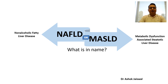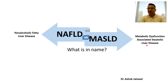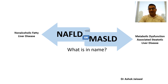Hello everyone. As we all know, very recently the term NAFLD — that is non-alcoholic fatty liver disease — has been renamed as MASLD, that is metabolic dysfunction associated steatotic liver disease. So what is in a name? Why did we require a change in name from NAFLD to MASLD? What was wrong with the word NAFLD? Before I get into all those questions, let's first discuss what is NAFLD.